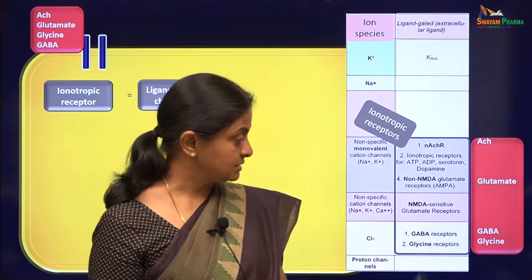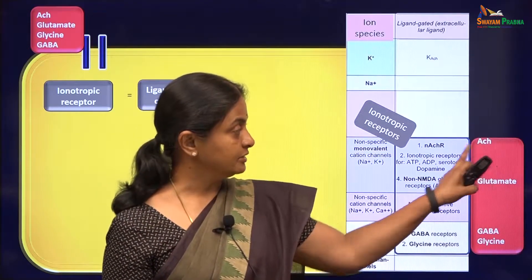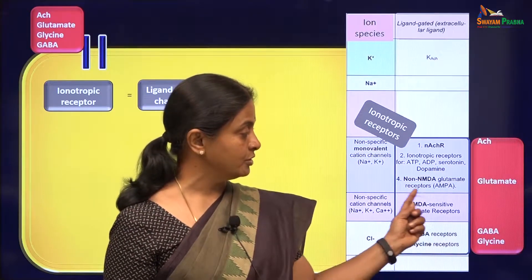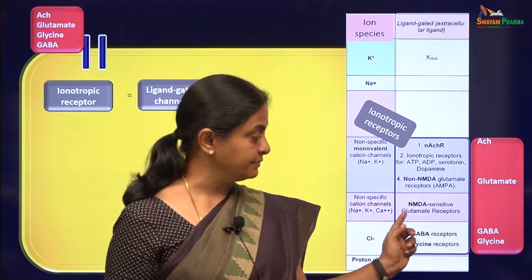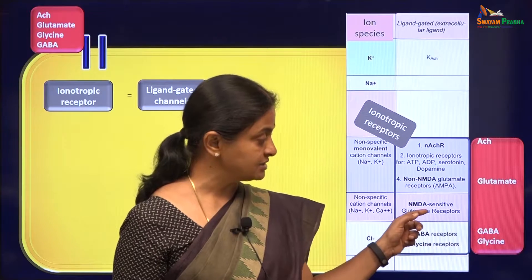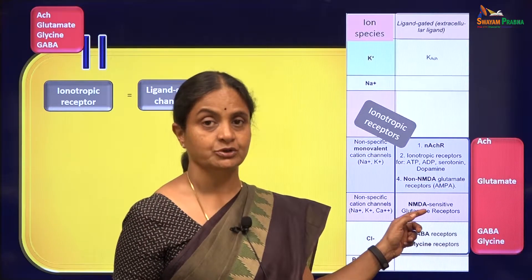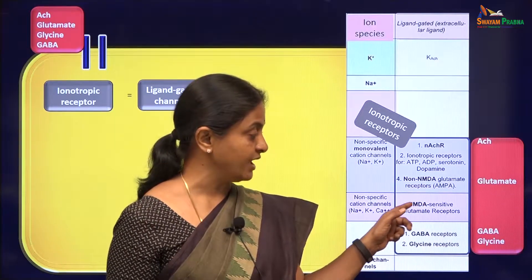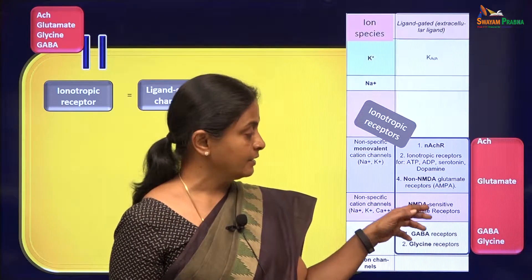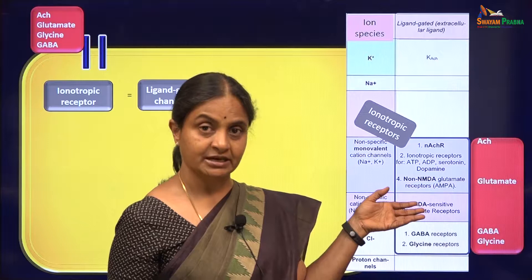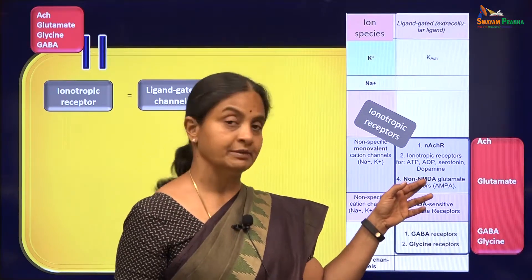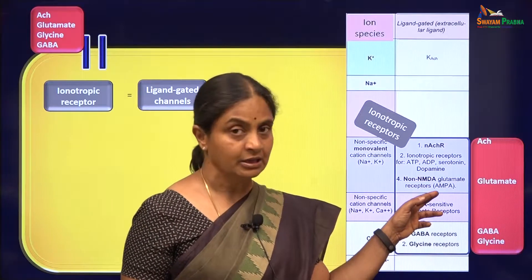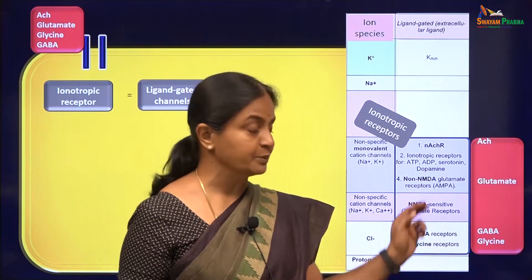So these ligands appear here in the table. Acetylcholine is the ligand for the nicotinic acetylcholine receptor. Glutamate is the ligand for non-NMDA and NMDA-sensitive receptors. Both of these are glutamate receptors. The natural ligand is glutamate, and NMDA is a blocker for this type of receptor. NMDA stands for N-methyl-D-aspartate. The other receptors which bind glutamate and are ionotropic receptors are called non-NMDA receptors. The AMPA receptor is just one of them; there is another one called the kainate receptor.